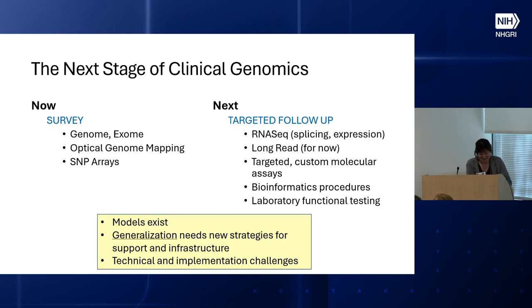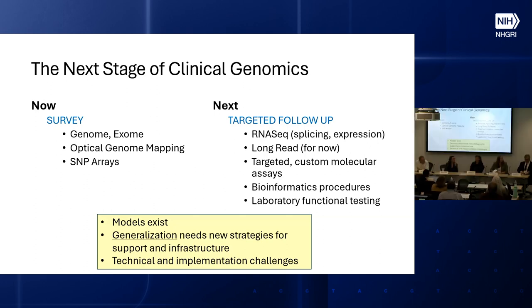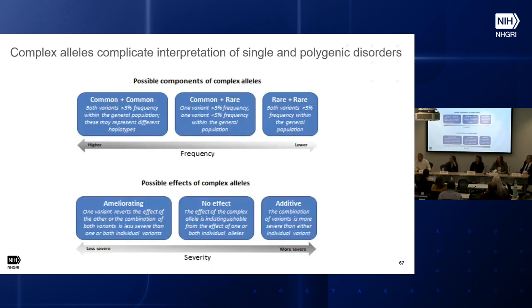Gary Cutting from Johns Hopkins shared his thoughts. When he saw the title 'genetics is complicated,' he said, yes it is — because genetics is the composite of both genome variation, environmental effects, stochastic effects, and everything else discussed earlier.